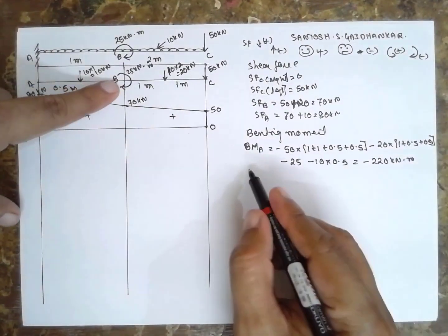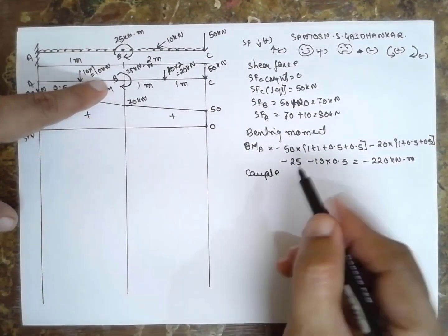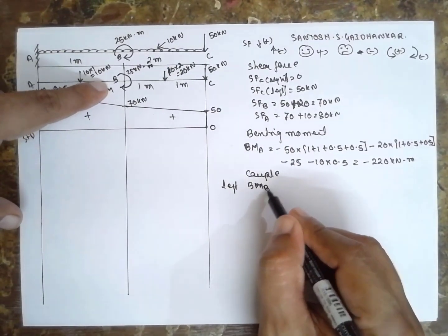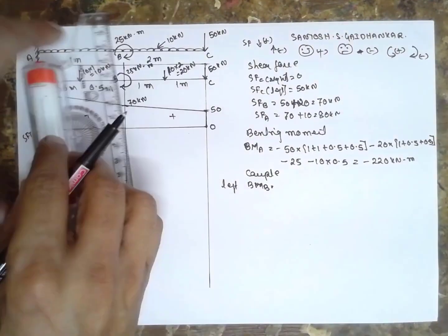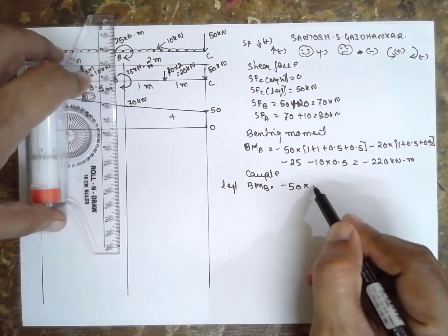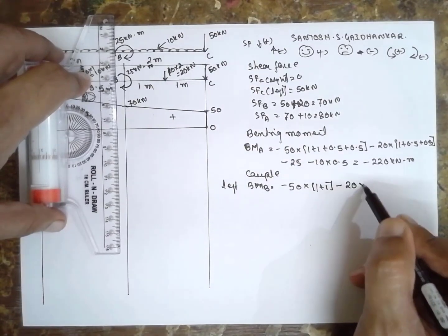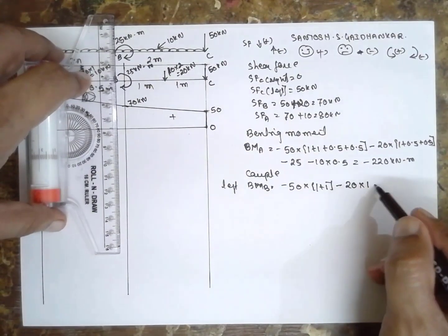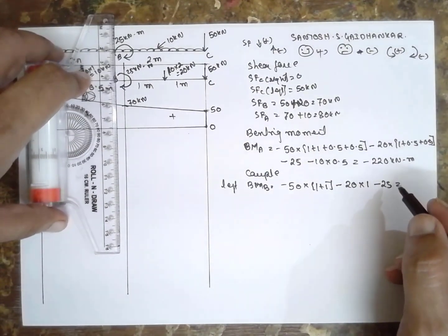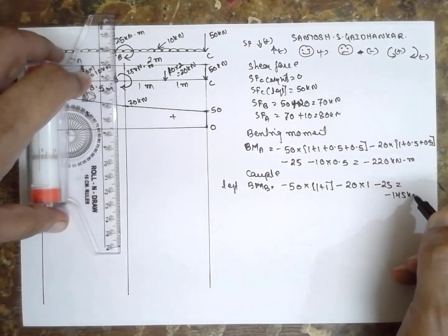Next at B, there is a couple, so consider left and right. BM at B left: minus 50 into 2 (1 + 1), minus 20 into 1, and the couple is minus 25. The answer is minus 145 kN·m.